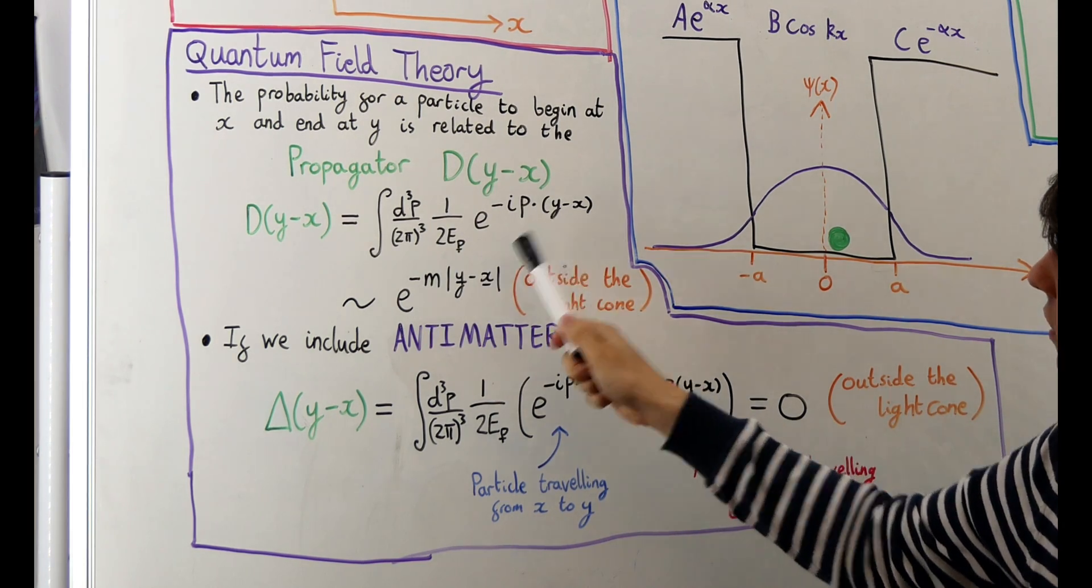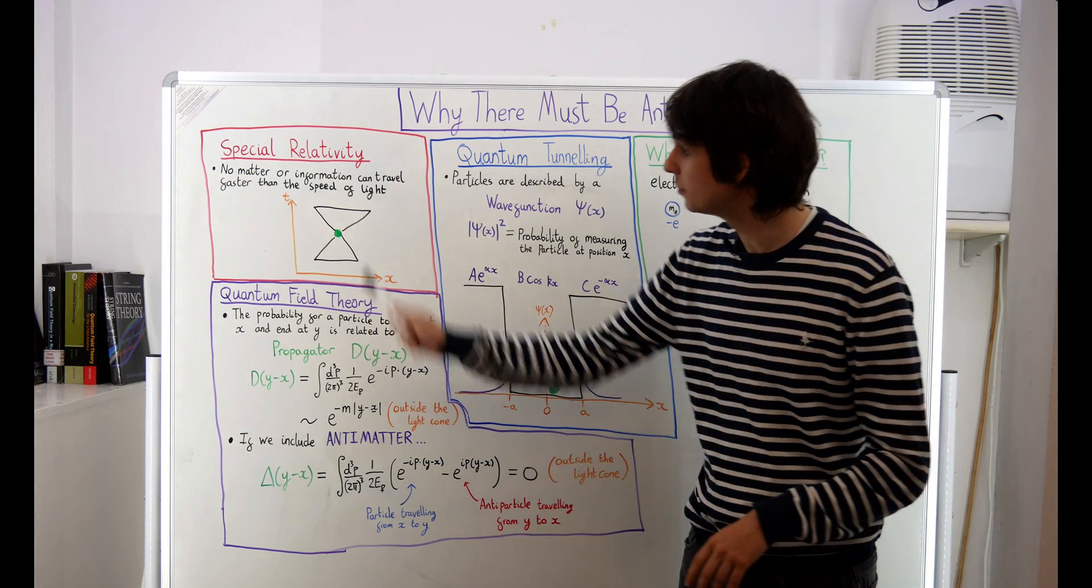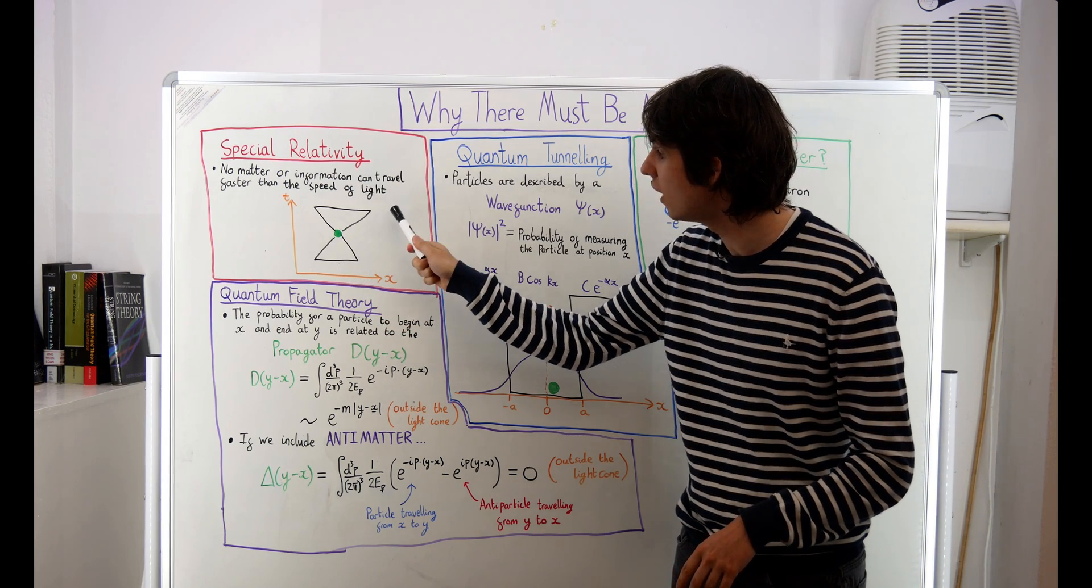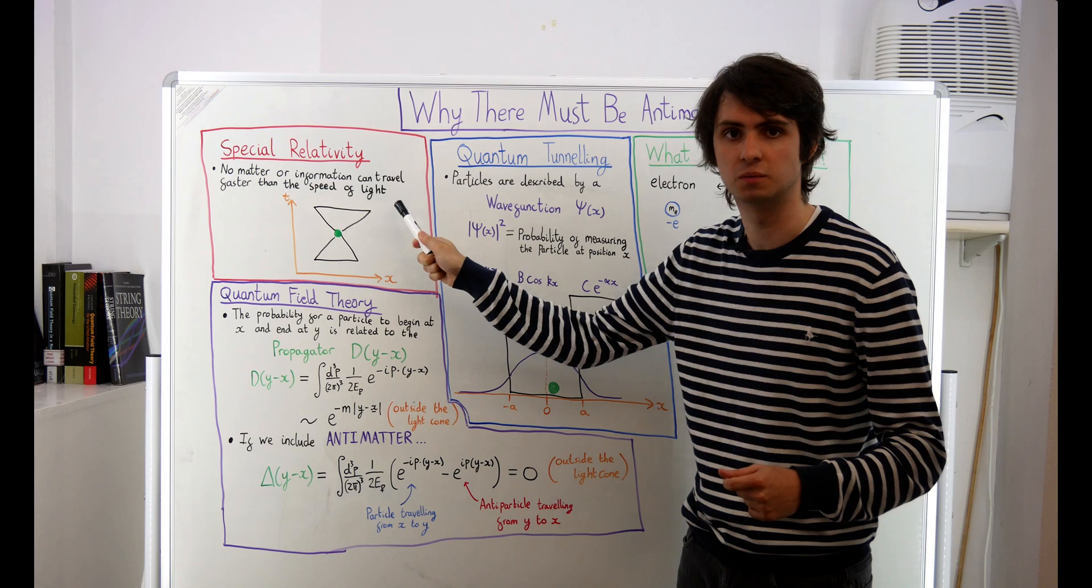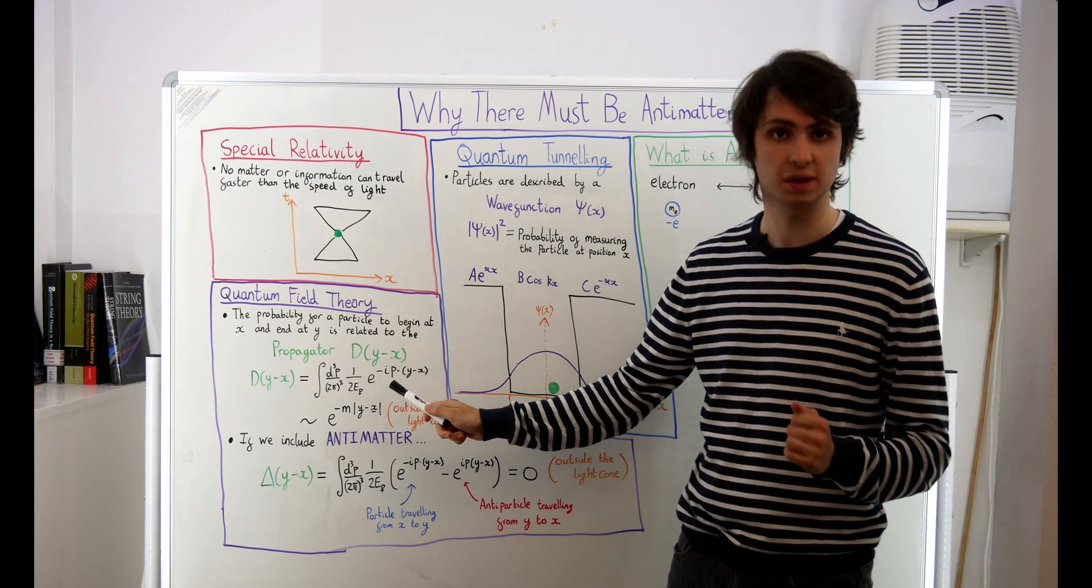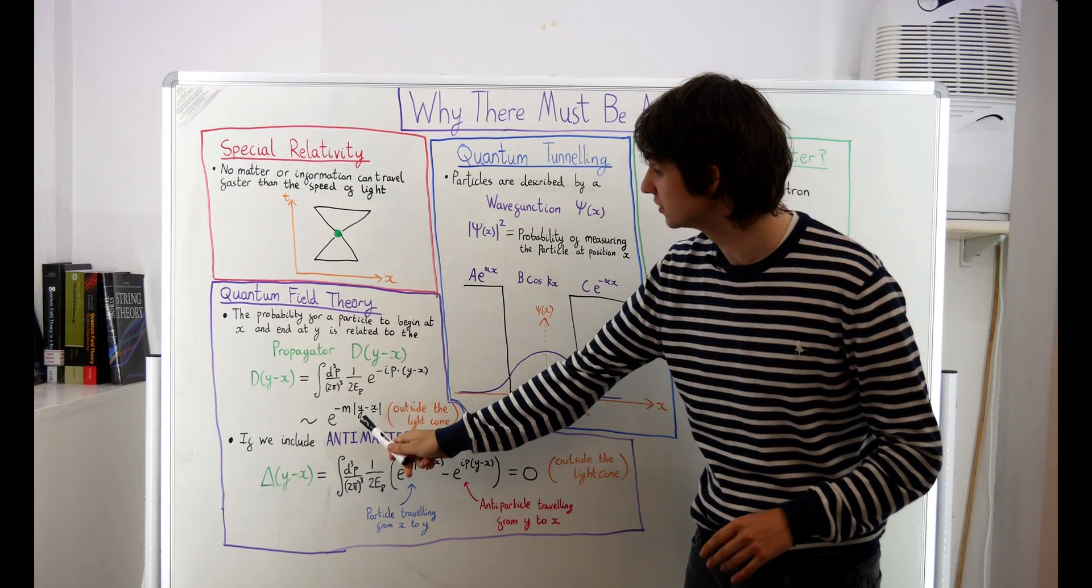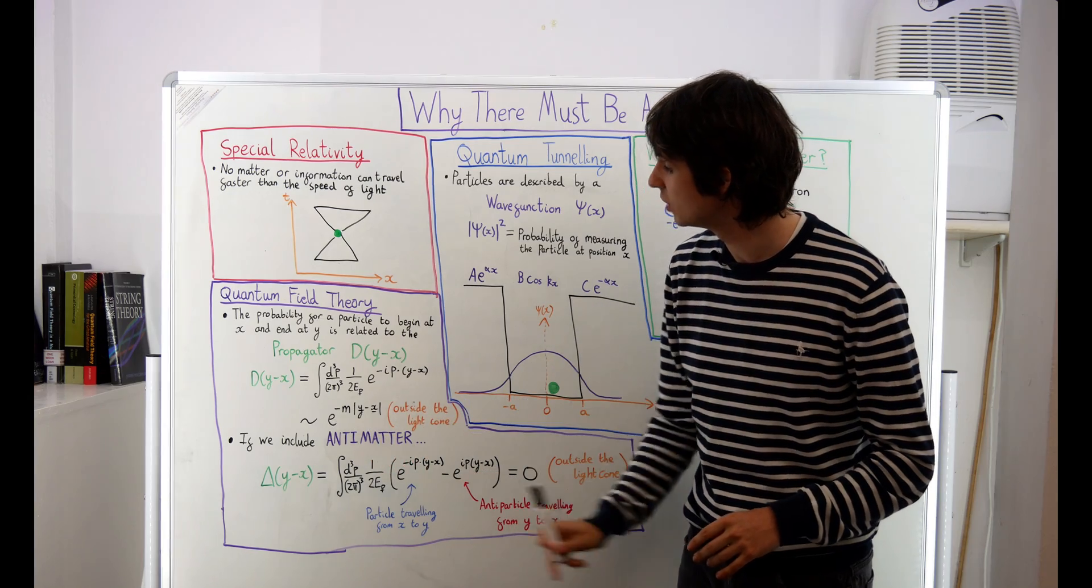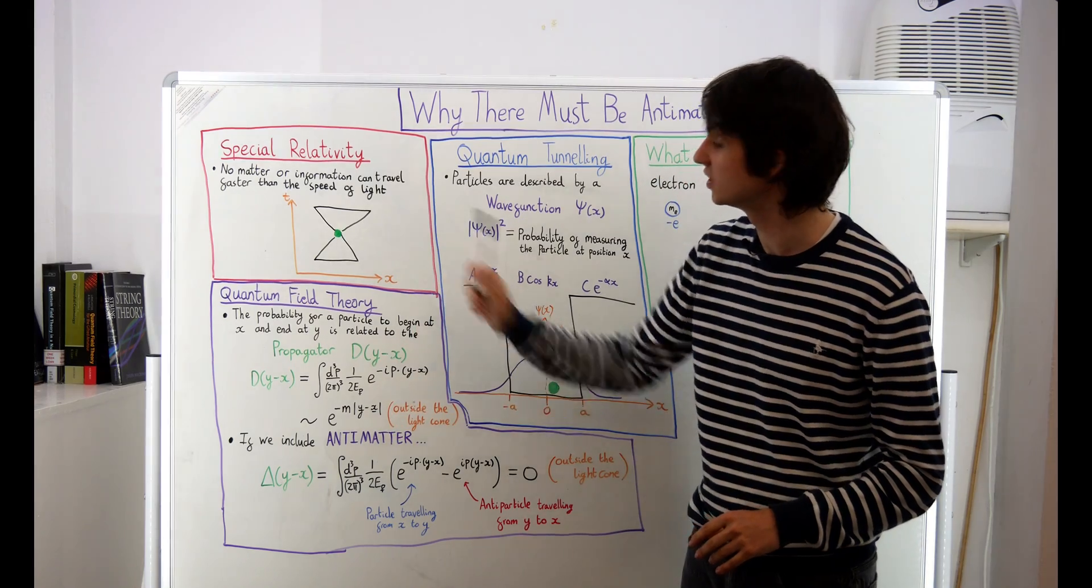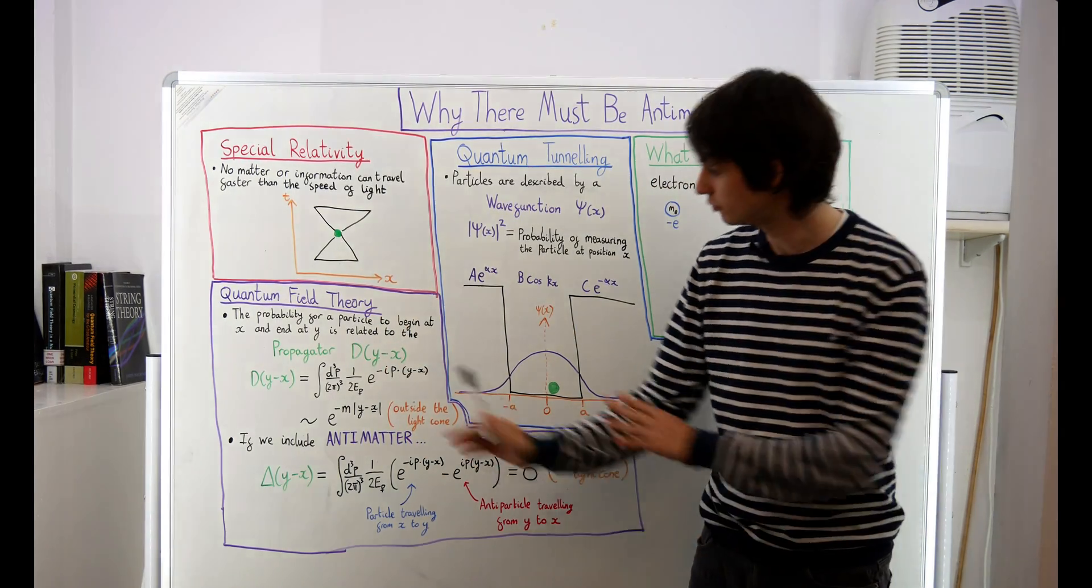The propagator for a scalar particle, which is just a certain kind of particle, looks like this. Now let's say that we want to calculate the probability of a particle moving from its initial position here at x to a position y outside of its light cone. It's a bit of a pain to calculate unless you happen to know how to do complex number integration, but for our purposes we just need to know that the result looks something like this. E to the minus m, y minus x. Where m is the mass of the particle, y is the position outside of the light cone, and x is the initial position of the particle.